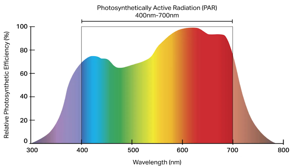Now photosynthetically active — the P and the A. These two work together because what this means is that the radiation is going to be directly activating photosynthesis. In other words, these are the wavelengths of light that the plant uses directly for photosynthesis.